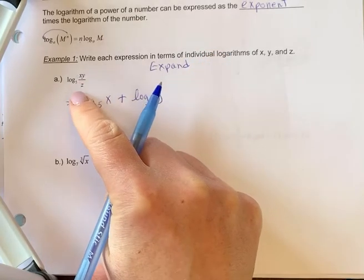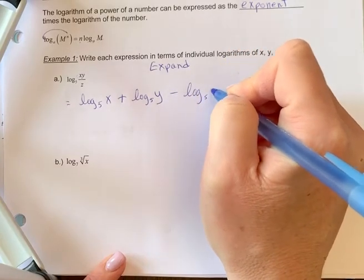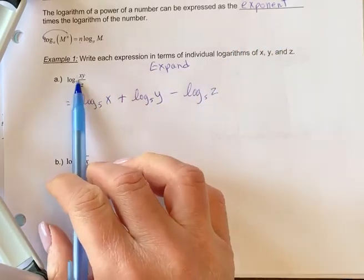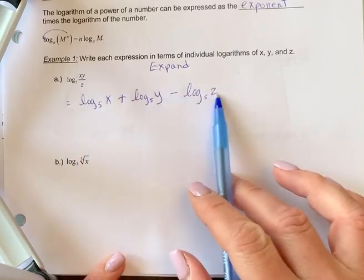Now, because this part's division, you put a subtraction sign. Anything in the numerator you're going to be adding. Anything in the denominator, you're putting a minus sign for.